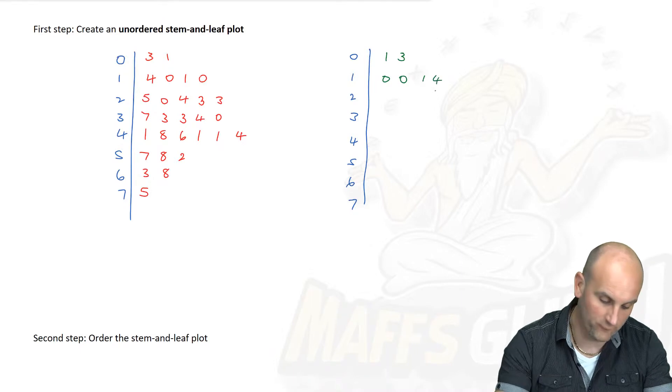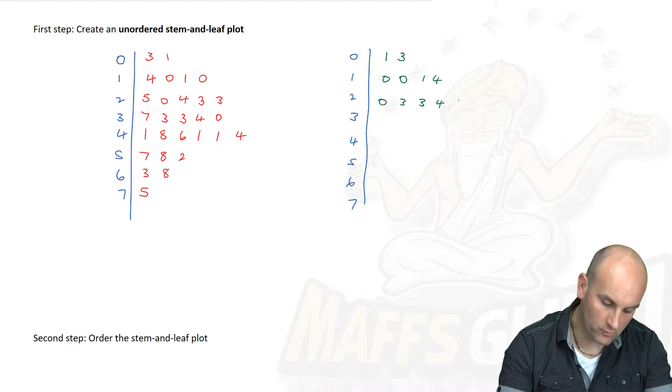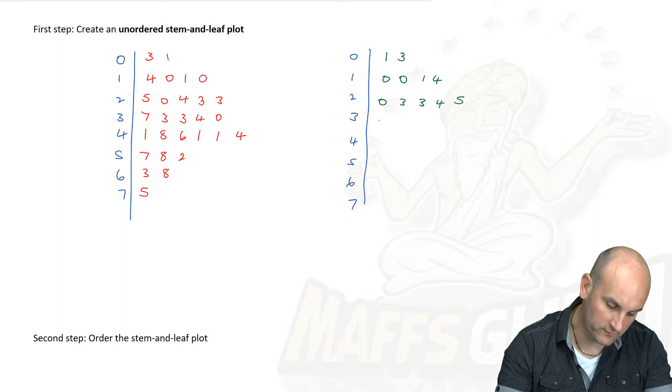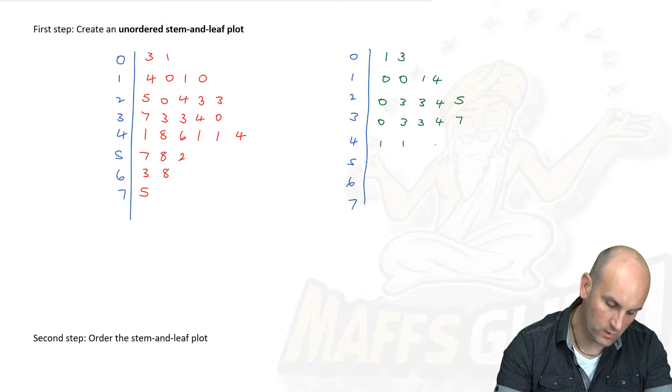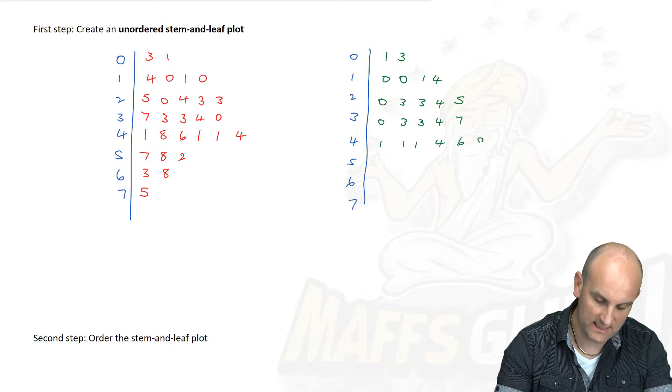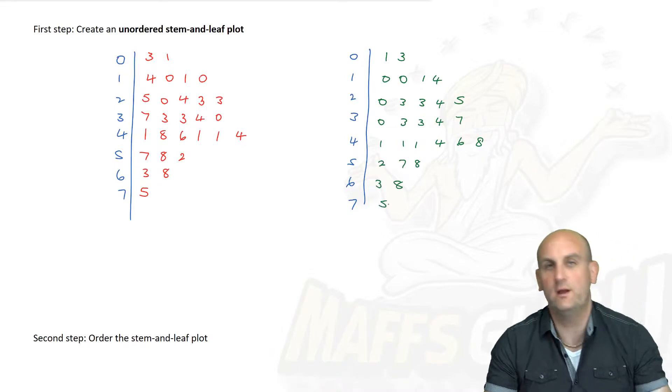By that I literally mean just go across line by line. I've got 3, 1, which if I put in order is 1, 3. Then I have 0, 0, 1 and 4. 0, 3, 3, 4 and 5. We've got 0, 3, 3, 4 and 7. Then we get 1, 1, 1, 1, 4, 6, 8. Almost done. 2, 7, 8, 3, 8 and 5. There we go. We are done.